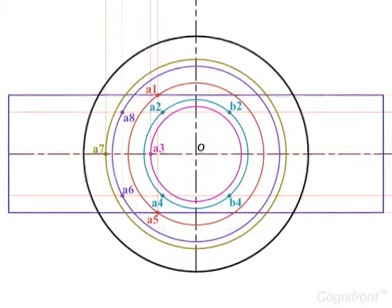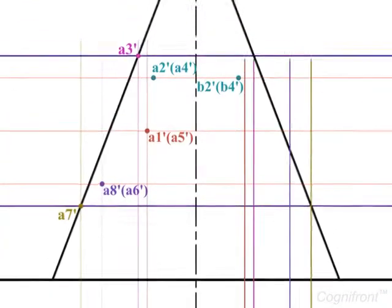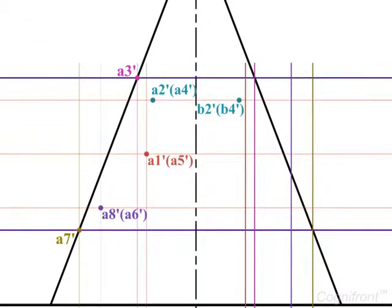Now repeat the above steps and obtain the points B1, B3, B5, B6, B7 and B8 in the top view. By projecting these points onto the front view, we would get points B1-dash, B3-dash, B8-dash and B7-dash.